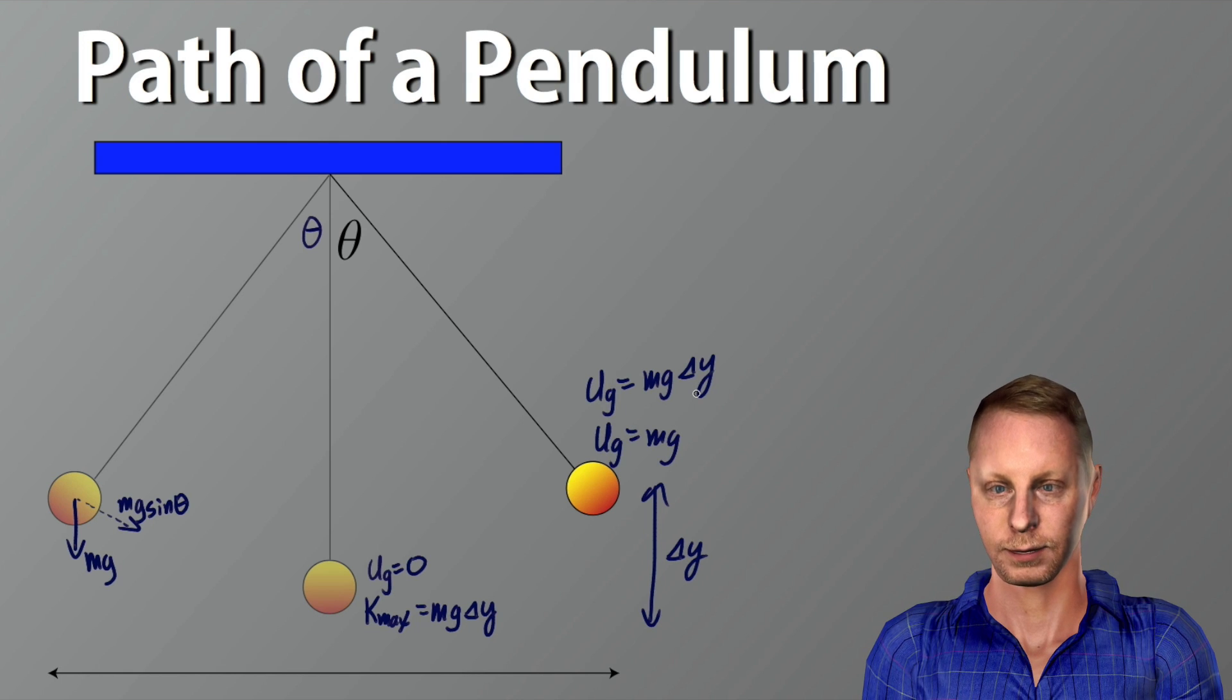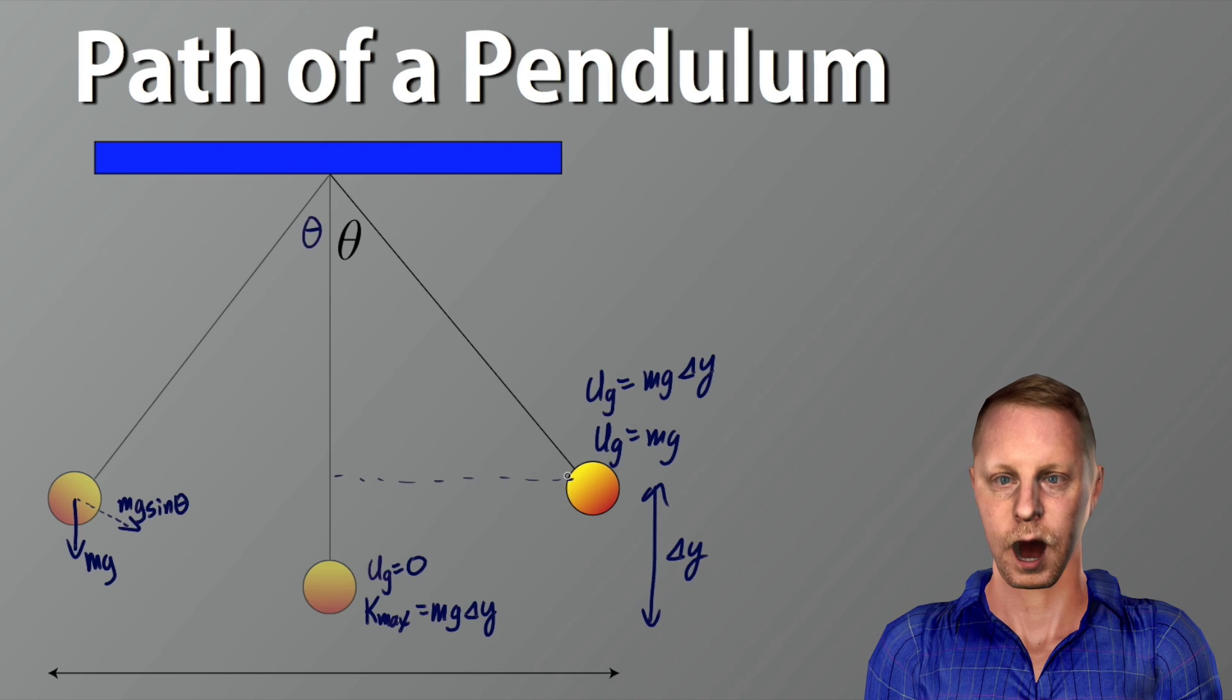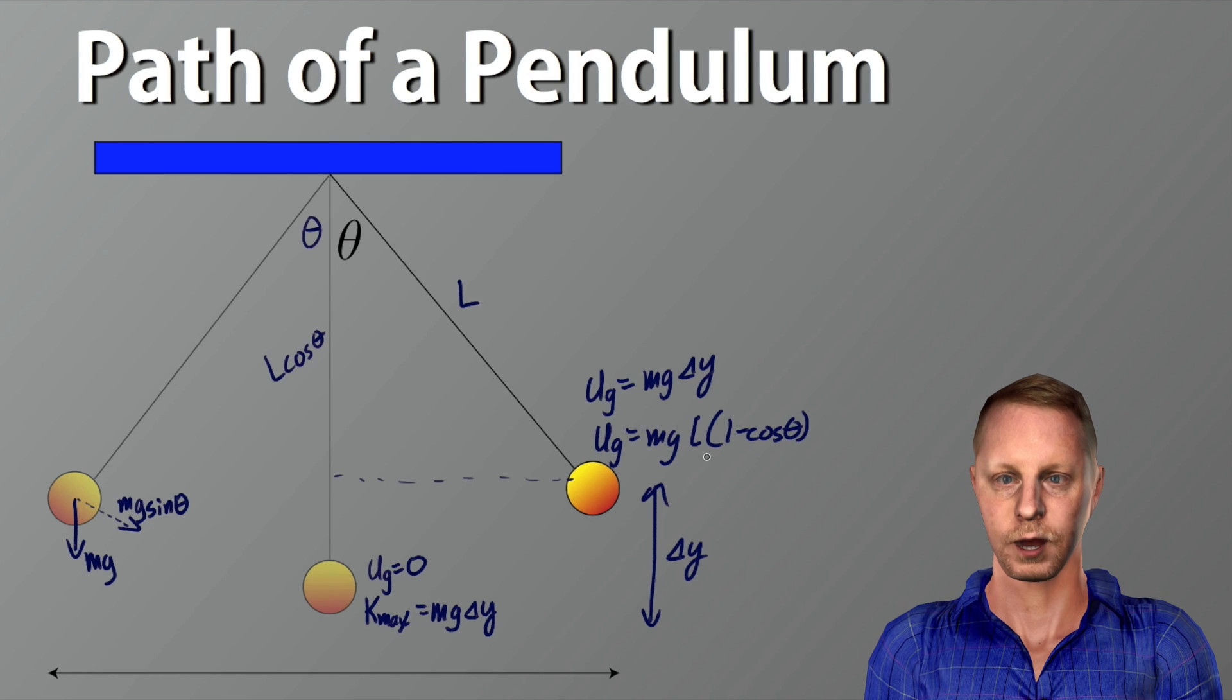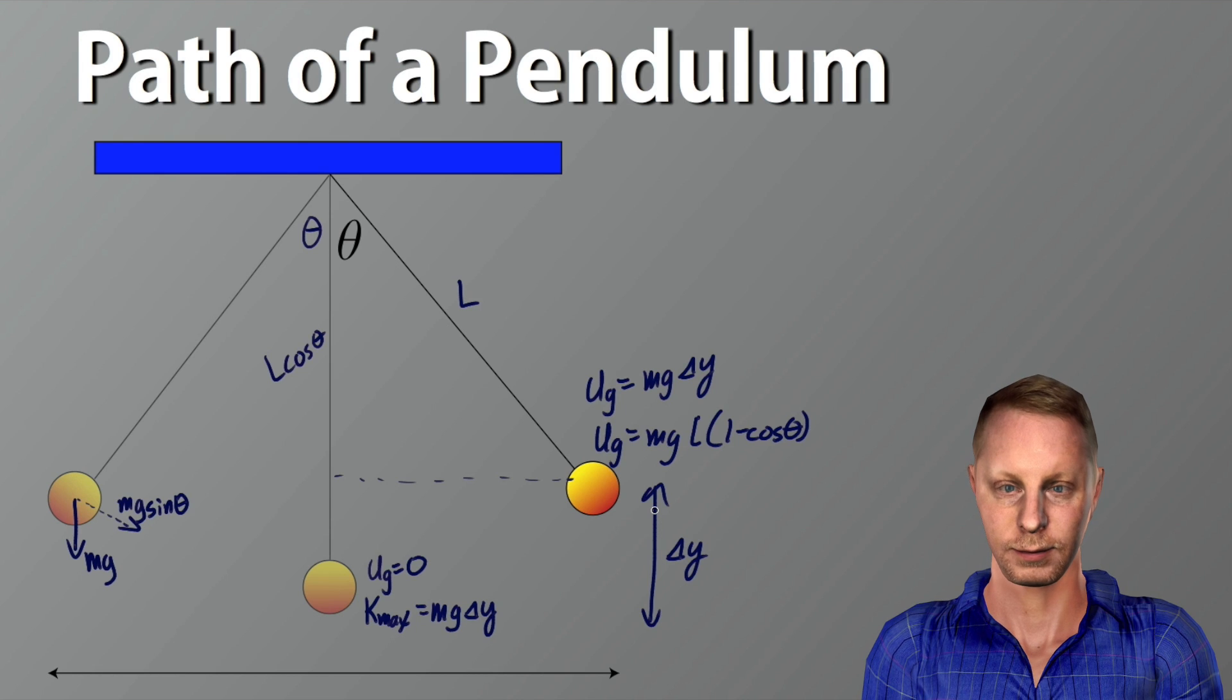Well, that's going to be mg. Delta y then looks like if we do a little bit of trigonometry, if we call this length l, there's our theta, then it looks like this is going to be cos theta, l cos theta, so that whole thing will be mg l, one minus cos theta for our change in height.